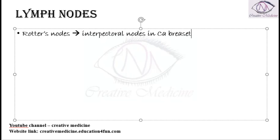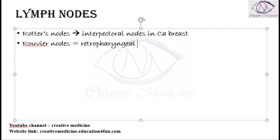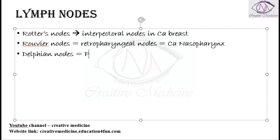Rotter's nodes are seen in carcinoma breast. Then we have Rouvière's nodes. Rouvière's nodes are actually retropharyngeal nodes, and these are seen in carcinoma nasopharynx. Then we have Delphian nodes. Delphian nodes are precricoid nodes.